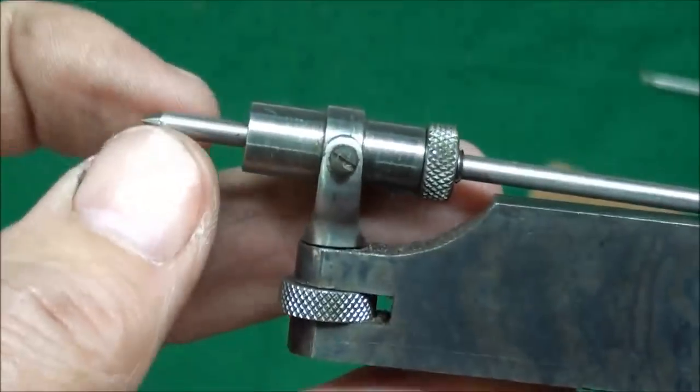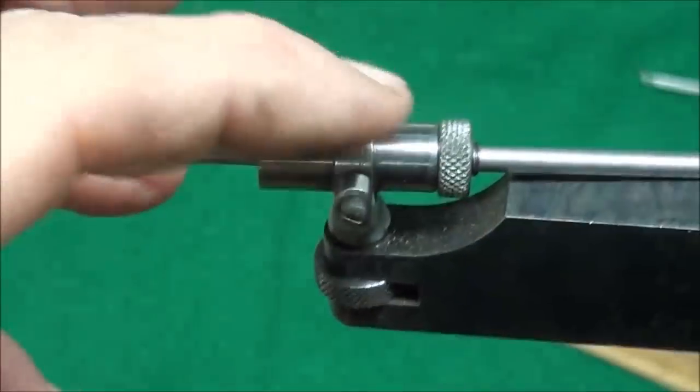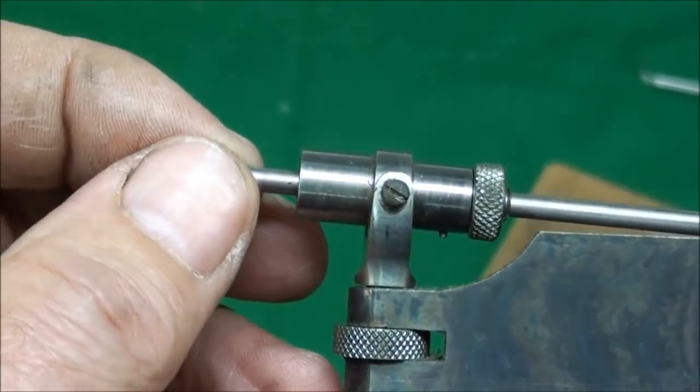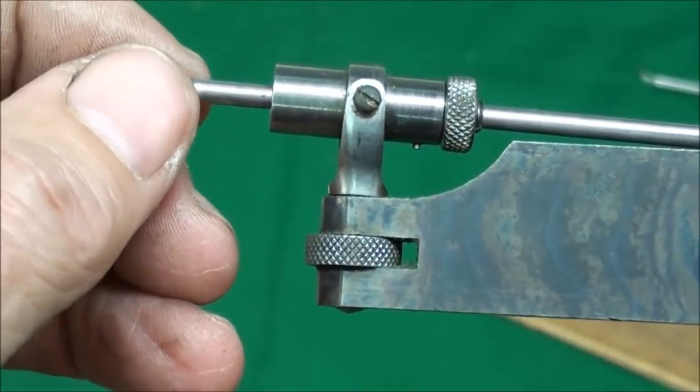Note that with the Brown and Sharp version, the spring is inside of this barrel here rather than using a leaf spring. This looks really a little more refined than the Starrett version.